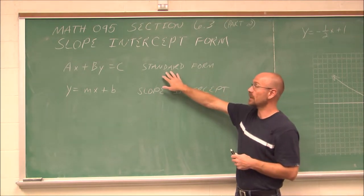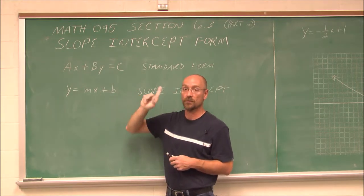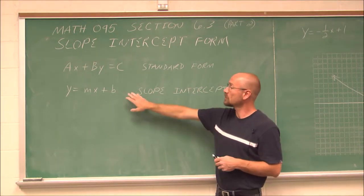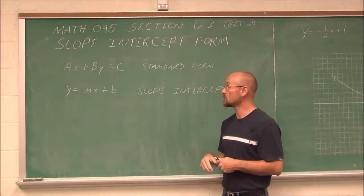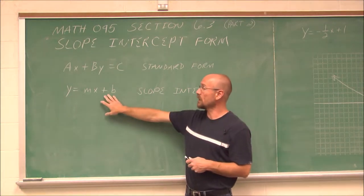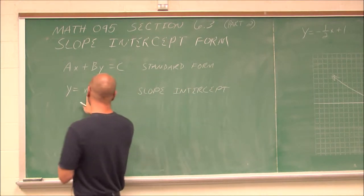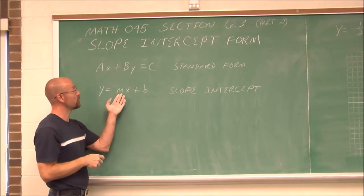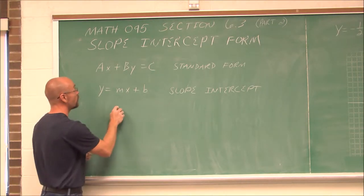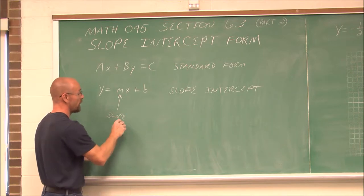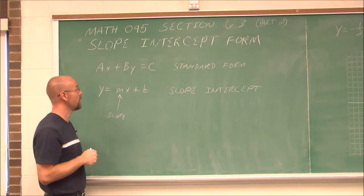We've discussed standard form, which is ax plus by equals c for linear equations with two variables both to the first power. Slope-intercept is the same thing — it's just that the equation is rearranged algebraically. By rearranging it this way, it helps us define the behavior of a line. The coefficient m is essentially the slope — the steepness, whether the line is increasing or decreasing, positive or negative.